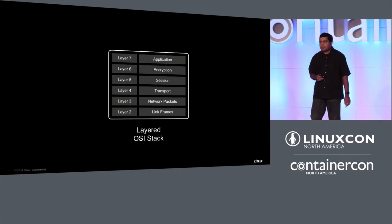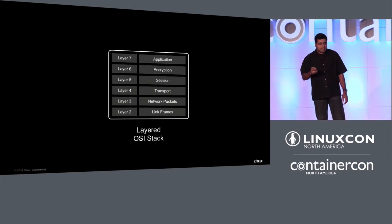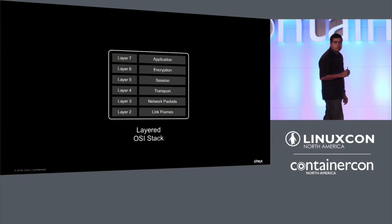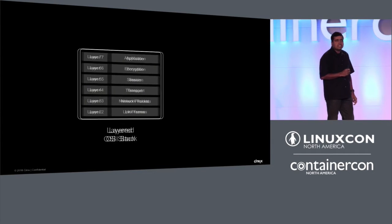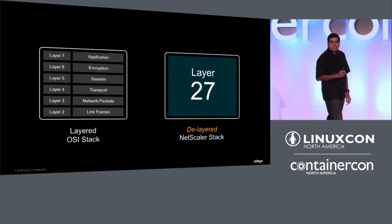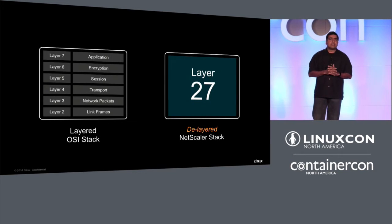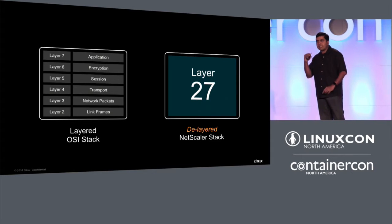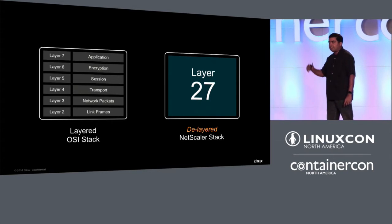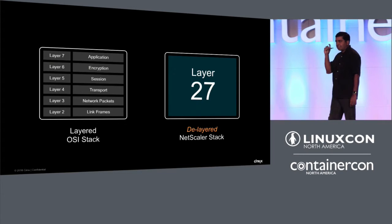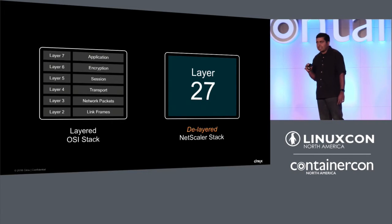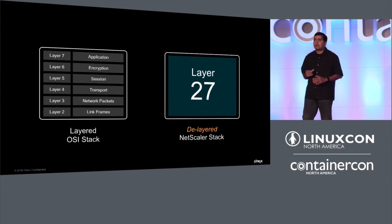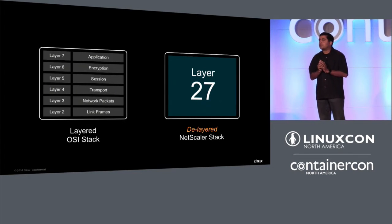And this is another staple of a networking CTO: the OSI stack. When I joined NetScaler, what I learned is that they had fused all of these different layers together. Instead of doing layers 2, 3, 4, 5, 6, and 7 separately, we had a single proxy stack that I call layer 27 because it had all of these layers fused together.